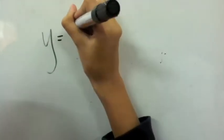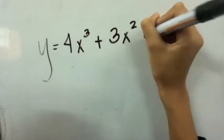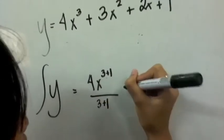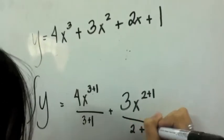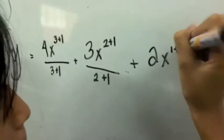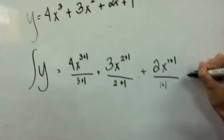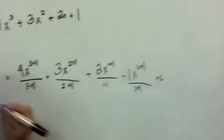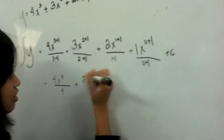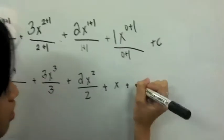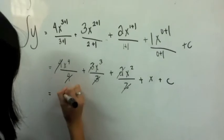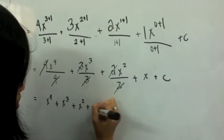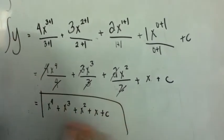Number 1: y is equal to 4x cubed plus 3x squared plus 2x plus 1. Getting the integral, the expression would be 4x raised to 3+1 all over 3+1, plus 3x raised to 2+1 all over 2+1, plus 2x raised to 1+1 all over 1+1, plus x raised to 0+1 all over 0+1, plus C. Combining the terms, we get the general integral: x to the 4th plus x cubed plus x squared plus x plus C.